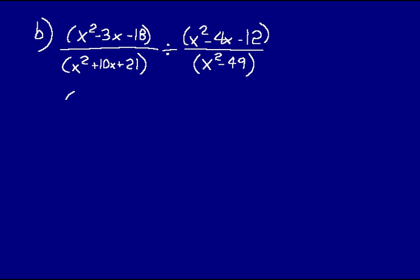On the top left, we'll have two binomials: X minus 6 times X plus 3. That would get us X squared minus 3X minus 18.